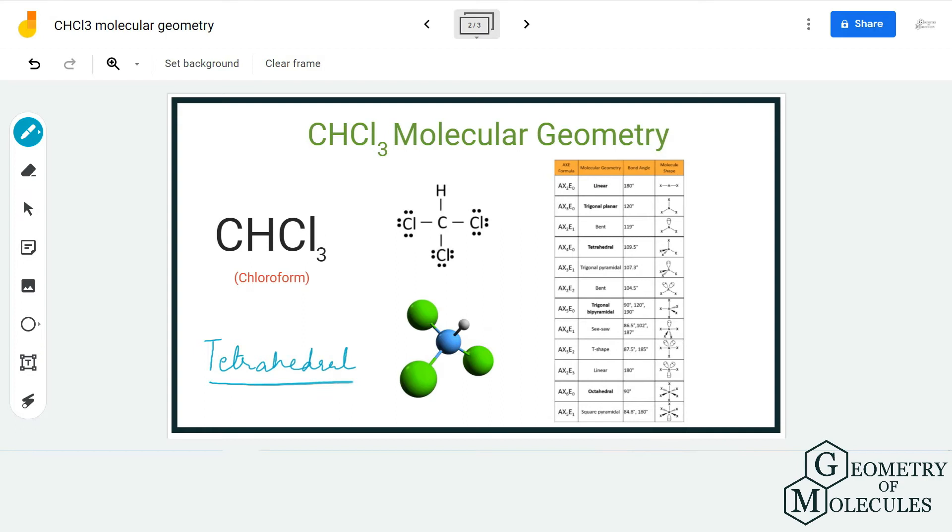The AXN or AXE notation for CHCl3 will be AX4 because there are four atoms forming bonds with the central atom. As there are no lone pairs, we have AX4E0, which corresponds to tetrahedral. This means the molecular geometry of this molecule is tetrahedral.